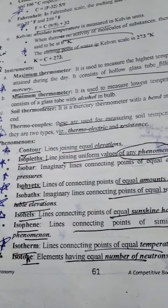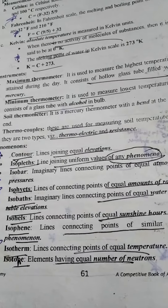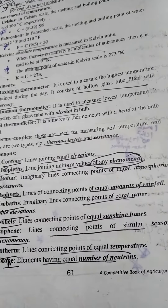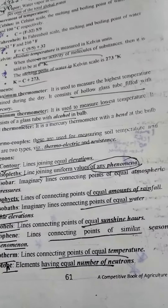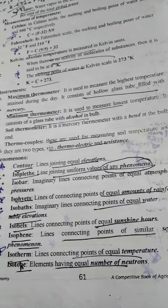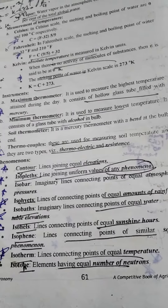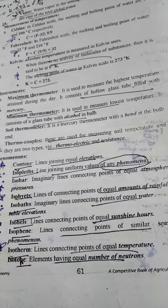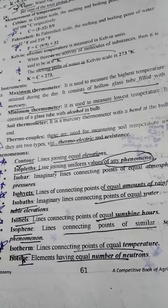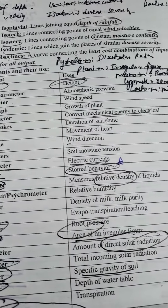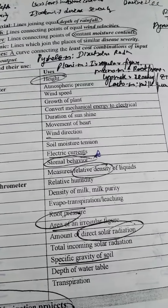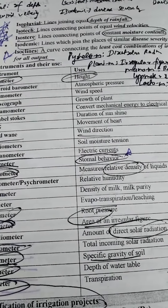These ISO terms can be asked in your exams. Contours: line joining equal elevation. A line joining uniform value of any phenomenon is called an isoplate. An imaginary line connecting points of equal atmospheric pressure is an isobar. Equal amount of rainfall is isohyet. Equal water table elevation is isobath. Equal sunshine hours is isohel. Line joining points of similar seasonal phenomena is isophene. Equal temperature is isotherm. Equal number of neutrons is isotone — this was asked in JRA Physical Science 2018. Equal depth of rainfall is isopluvial. Equal wind velocity is isotach. Equal moisture content is isostere. Similar disease severity is isodemic. Least cost combination of inputs is isocline.